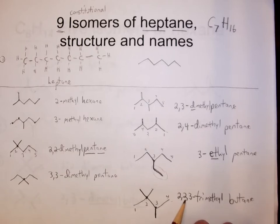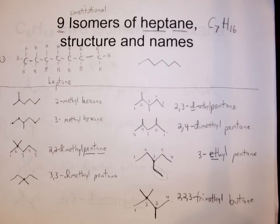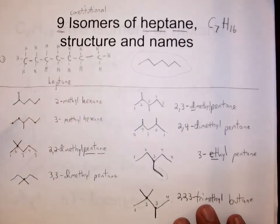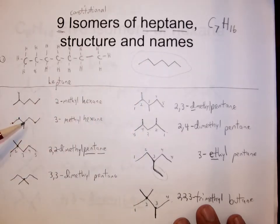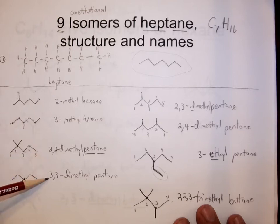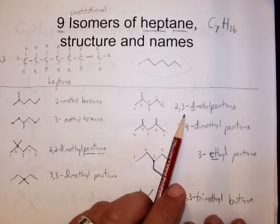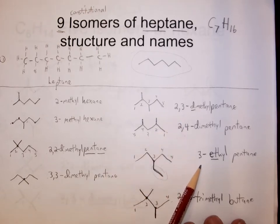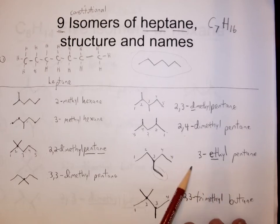So there are the nine isomers of heptane. The parent heptane is the first one, then we have 2-methylhexane, 3-methylhexane, 2,2-dimethylpentane, 3,3-dimethylpentane, 2,3-dimethylpentane, 2,4-dimethylpentane. The sneaky one I forget all the time is 3-ethylpentane, and then 2,2,3-trimethylbutane.